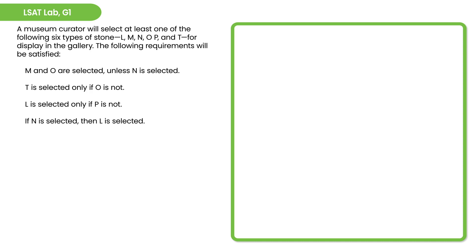What I'd like you to do is try this one first. Come up with a good game board — one that would allow you to create hypotheticals so that you can test cases whether things could be true or must be true, or counterexamples whether they don't have to be true, in order to help you navigate the answer choices. Then notate the rules next to the game board and make any inferences that fall into place from those rules. Take a few minutes to try this on your own, hit pause, and then when you're ready to check your work against mine, hit play again.